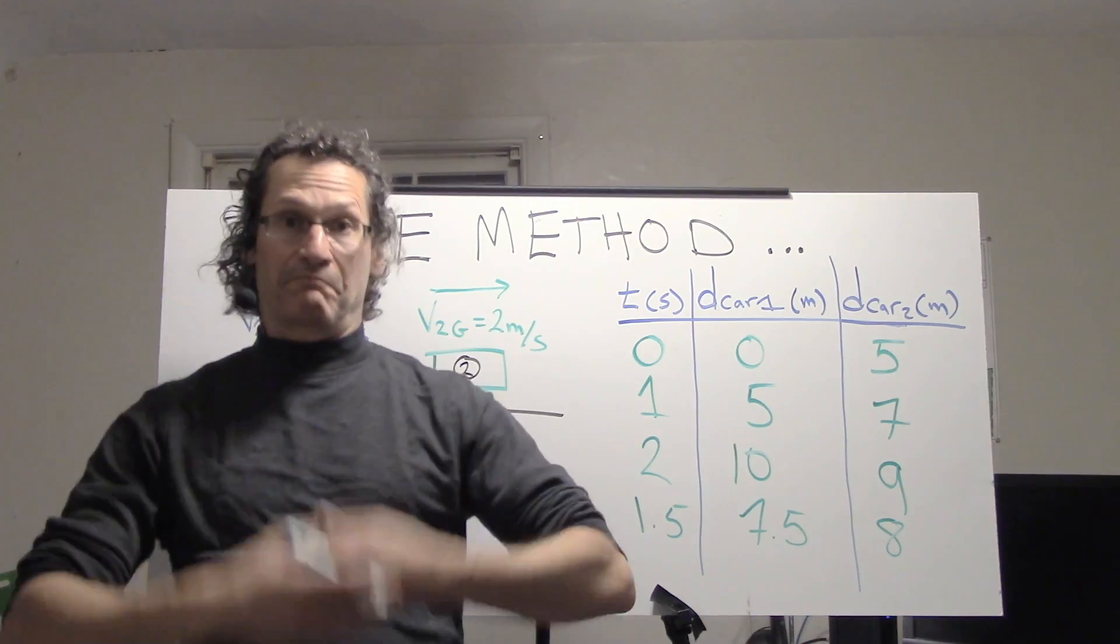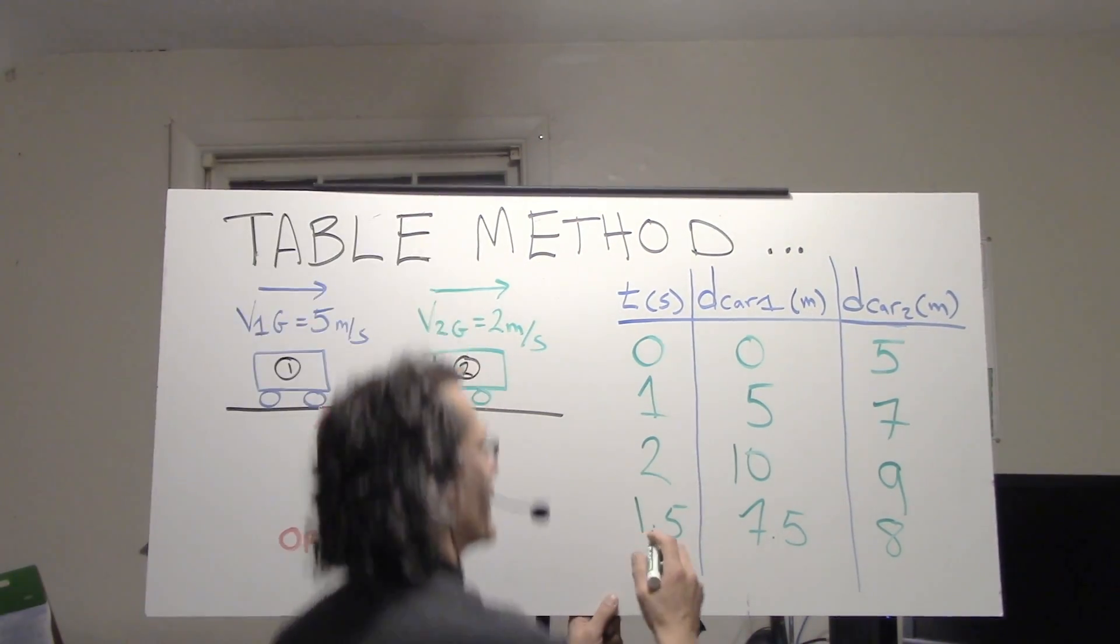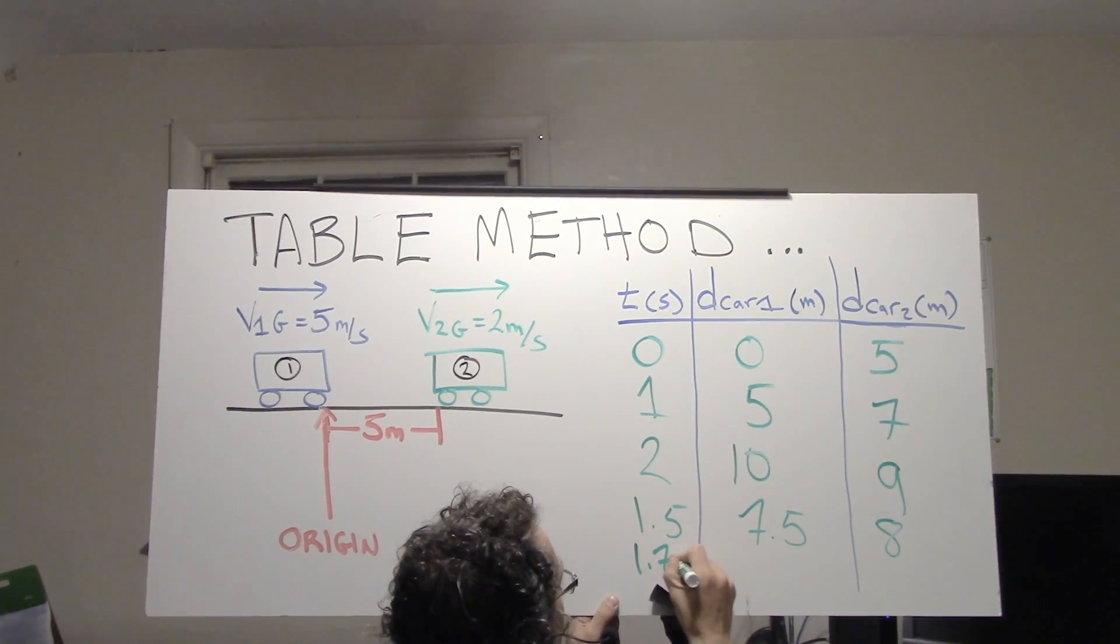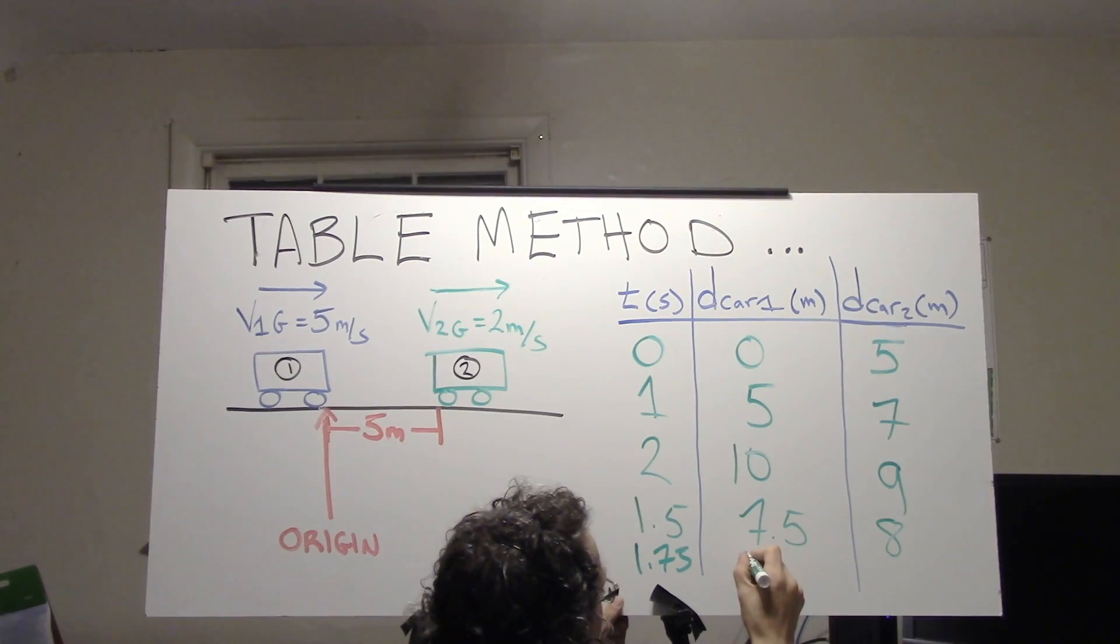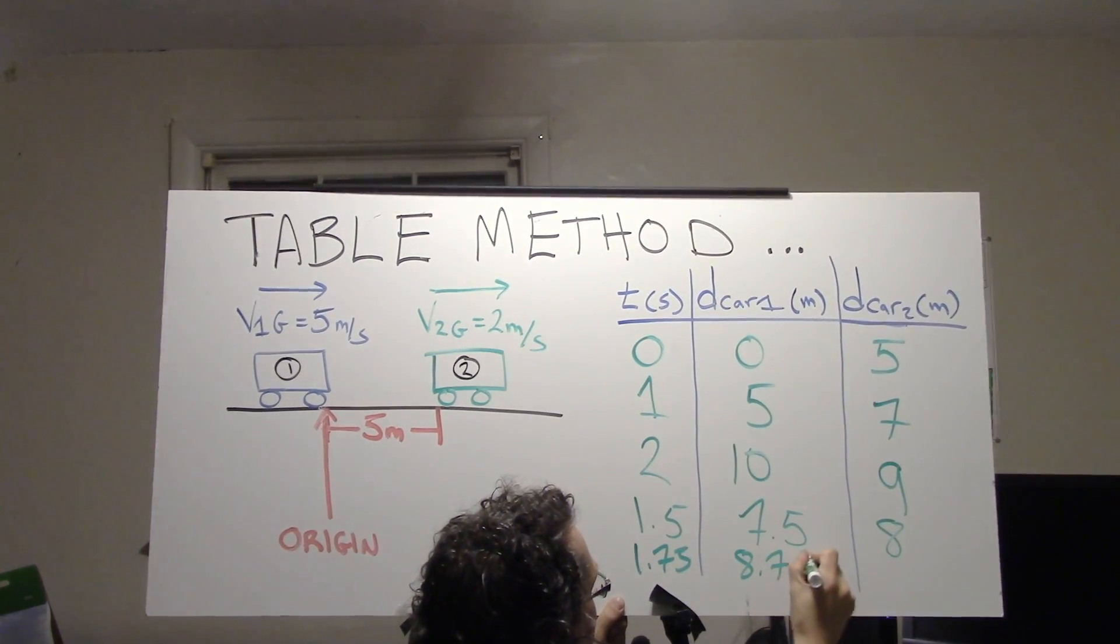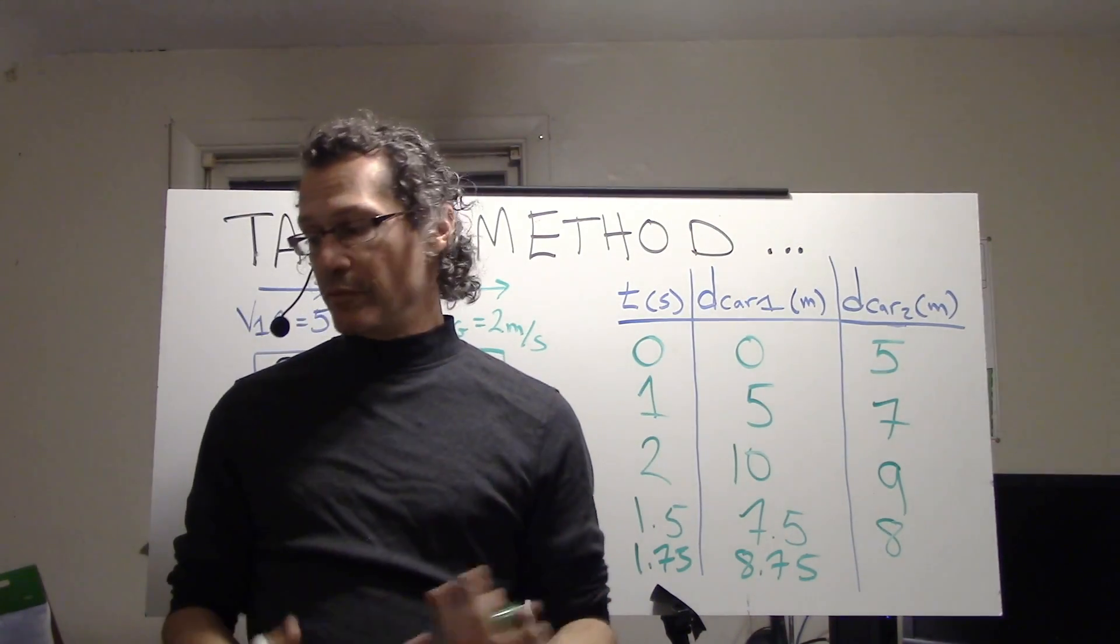What about 1.75? That's in between 1.5 and two. Well, let's try it. 1.75 seconds, the displacement of car one would be 8.75 meters, and car two's displacement will be 8.5 meters.